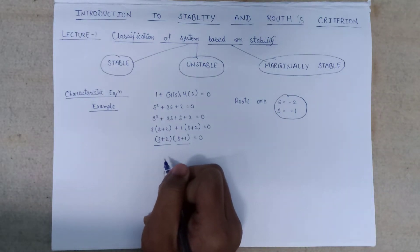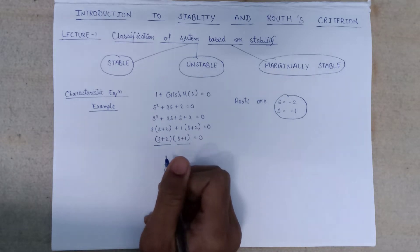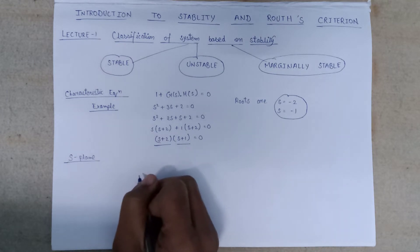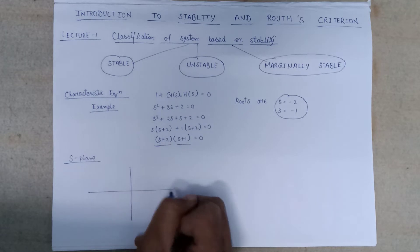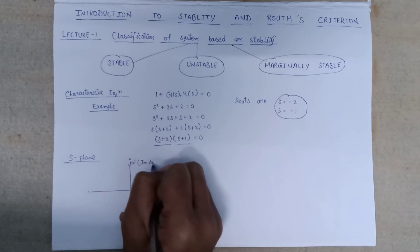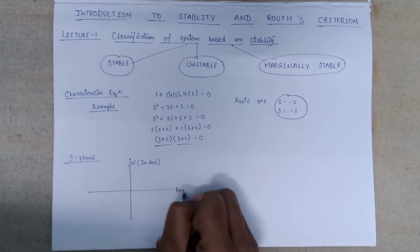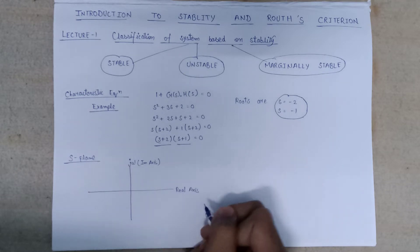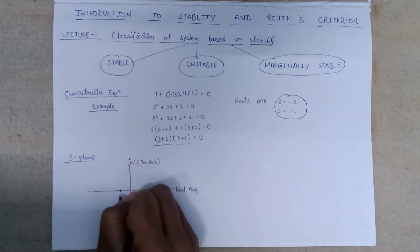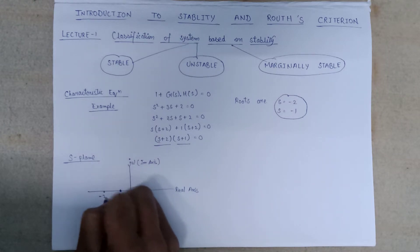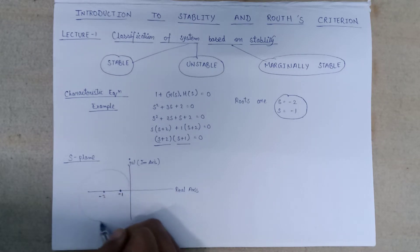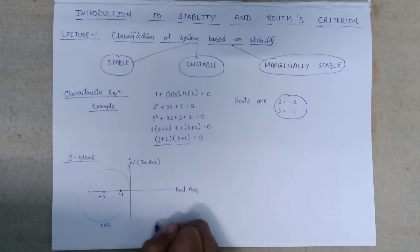Let us discuss about the stability of the system. We can find the stability based on the S-plane only. The S-plane can be represented with the j-omega axis, also known as the imaginary axis, and the real axis. If we plot the two roots onto this S-plane, then minus 1 will be here and minus 2 will be here. Both roots, minus 1 and minus 2, lie in the left-hand side area of the S-plane. This is the LHS part and this is the RHS part of the S-plane.